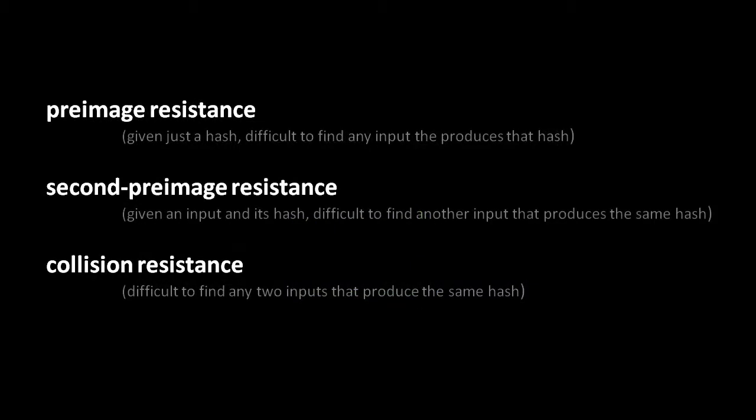More formally, the desired qualities of the cryptographic hash function are called preimage resistance, second preimage resistance, and collision resistance. Preimage resistance refers to what we first discussed: that given some output hash, it is very, very difficult — in fact, infeasible — to find any input that produces that hash. Second preimage resistance refers to the property that if you have both an input and its hash, it is difficult to find some other input that's going to produce that same hash.